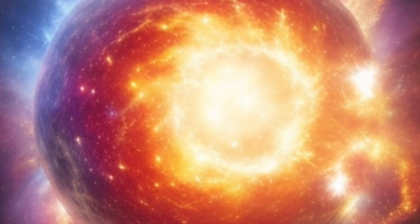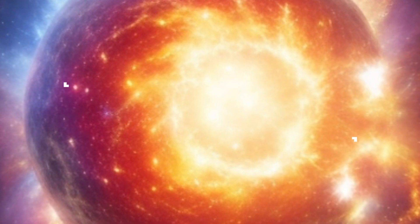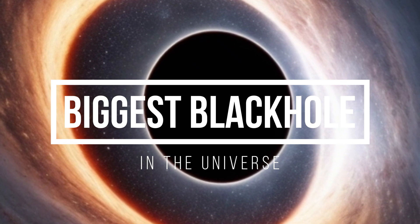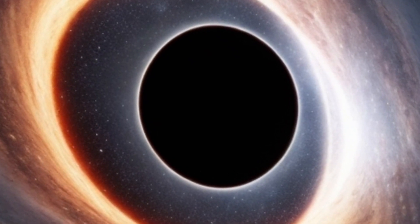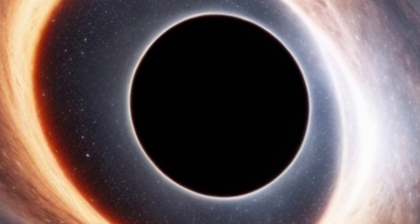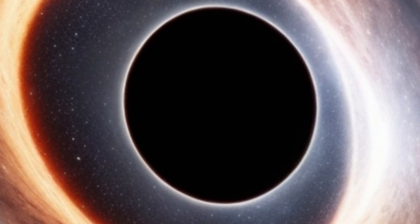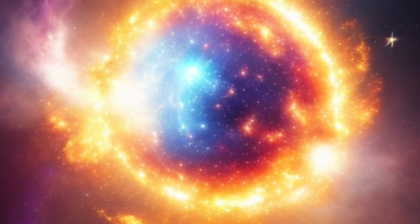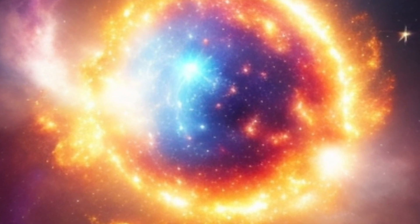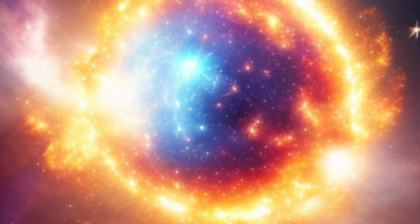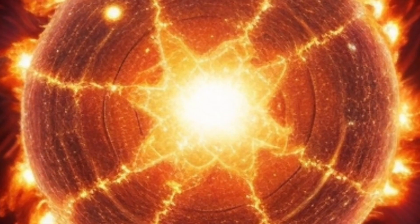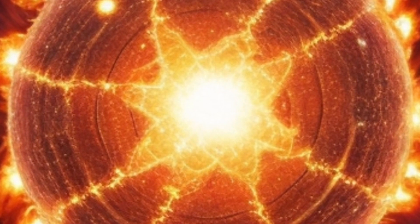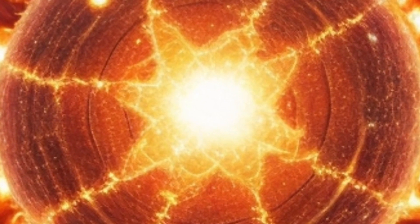The largest black hole currently known in the universe is TON 618, located in the Coma Berenices constellation. TON 618 is a quasar, a type of extremely luminous and energetic galactic nucleus powered by a supermassive black hole. The mass of TON 618's black hole is estimated to be around 66 billion times that of our Sun, making it one of the most massive black holes ever observed. This colossal black hole resides at the center of a distant galaxy, and its immense gravitational pull is responsible for the intense brightness of the quasar.